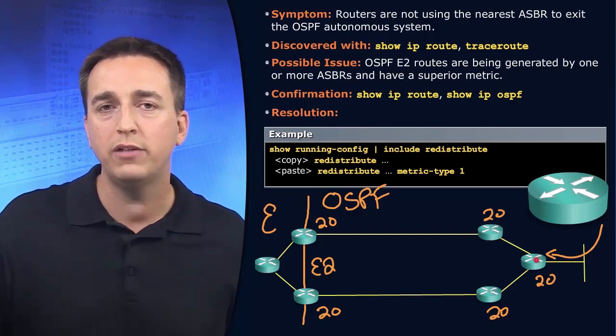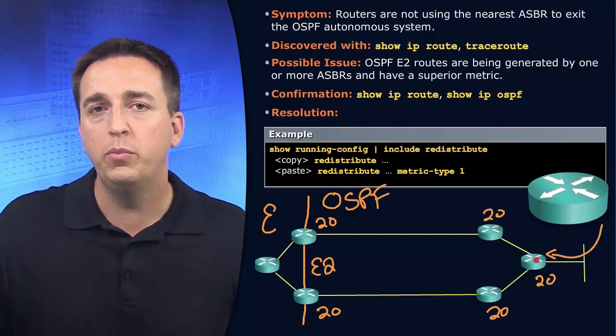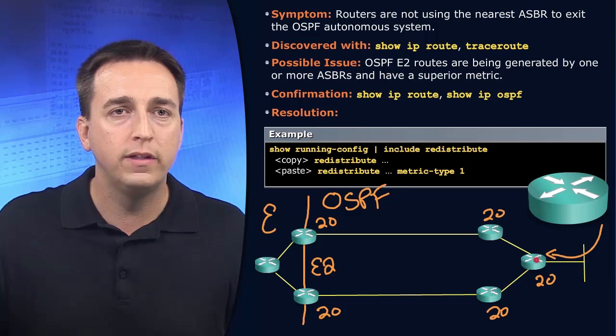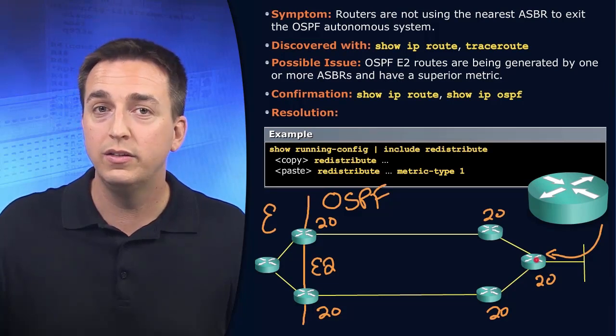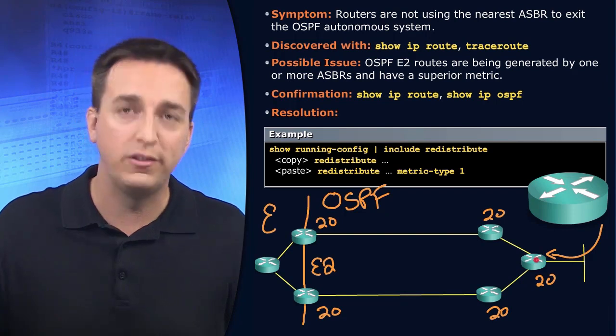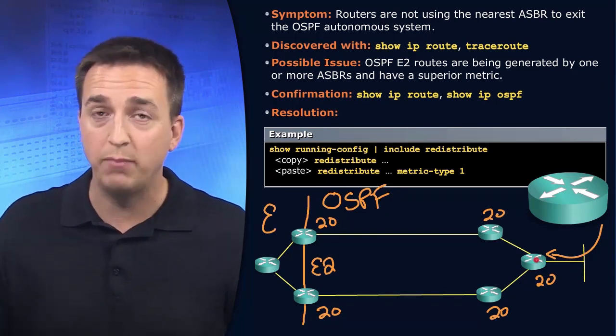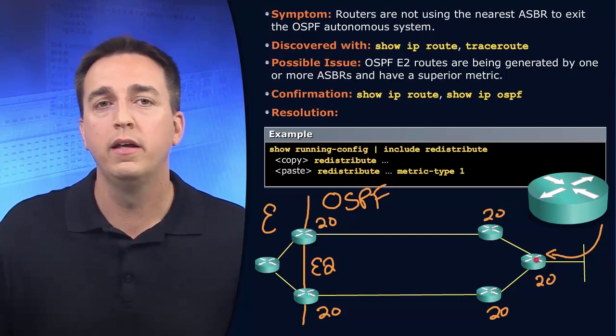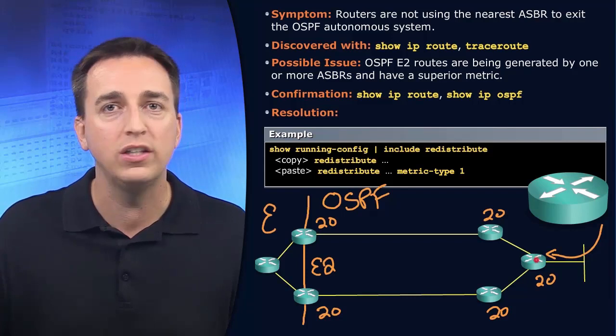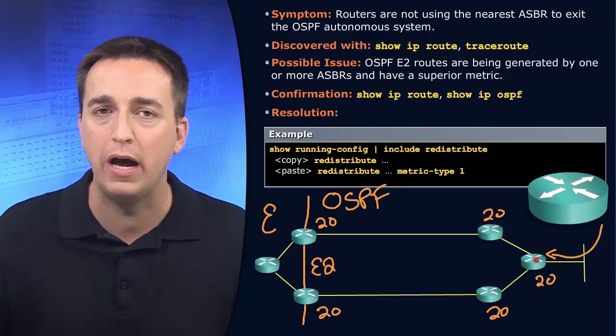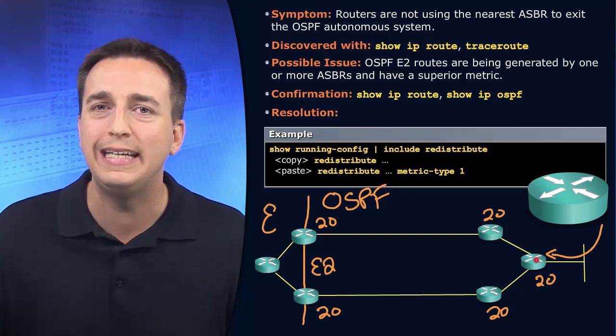And the metric says 20 for both paths, but it'll only load balance if the following exists. And that is number one, the metric type is E2. Number two, the metric is the same. So in this case it is 20. And number three, the paths to reach the autonomous system boundary router that advertised the redistributed routes is equal.